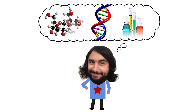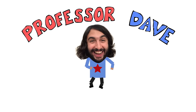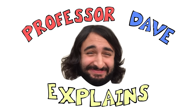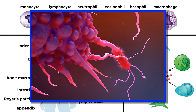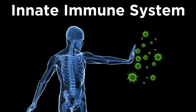Professor Dave Explains. At this point in the series, we've introduced aspects of the immune system at the molecular, cellular, and organismal levels. So now it's time to start learning about how all these different components work together to recognize and eliminate pathogens. Let's start out by introducing the innate immune system, so that we can get an overview of some of the things we will discuss in greater detail over the next few tutorials.